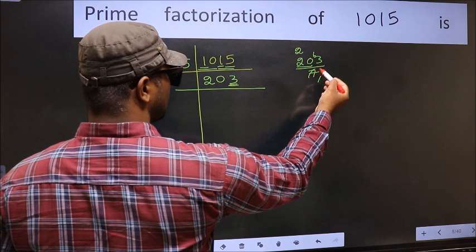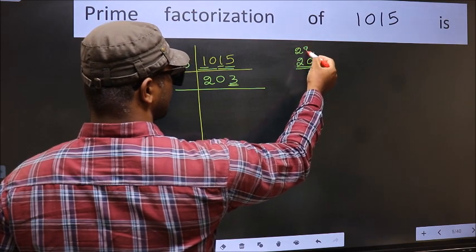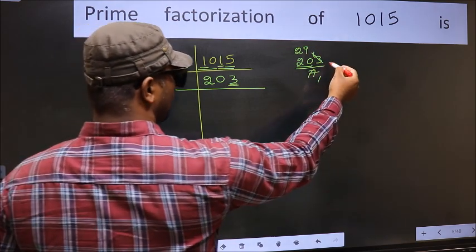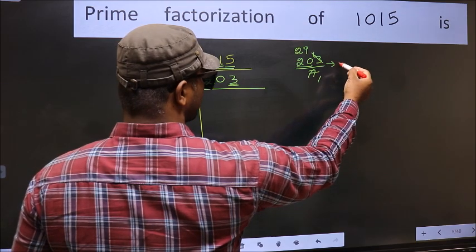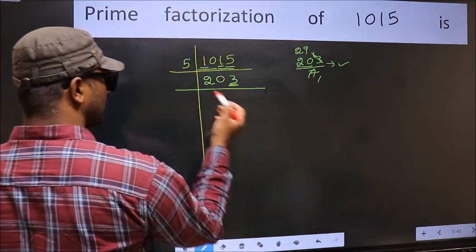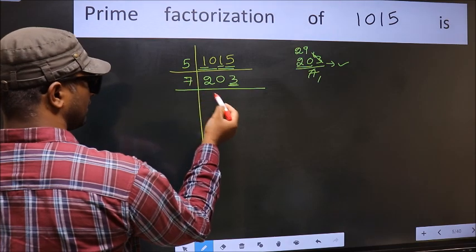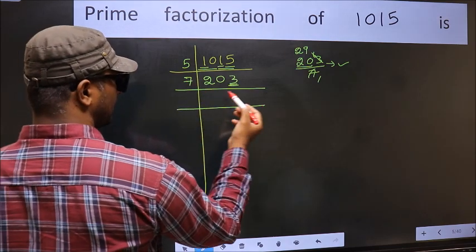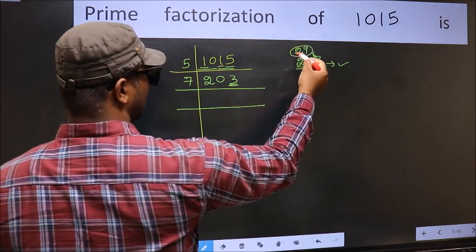6 carried forward 63. When do we get 63 in 7 table? 7 times 9, 63. No number has been left, therefore this is divisible by 7. So, we take 7 here and here we write this number, 29.